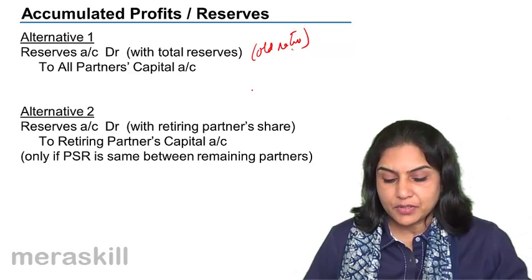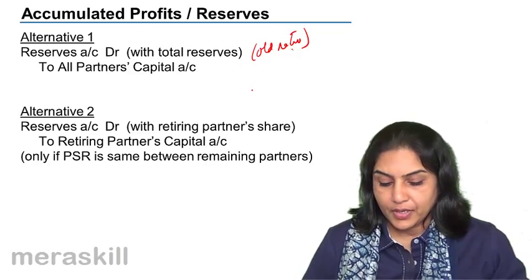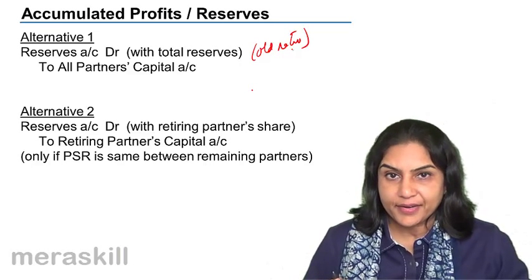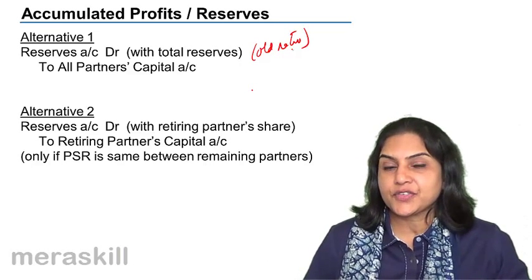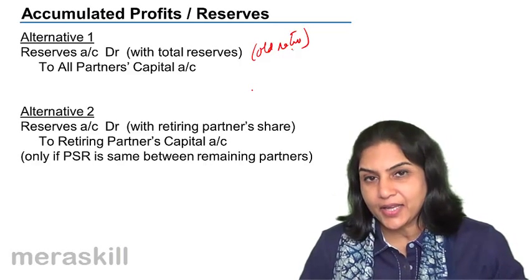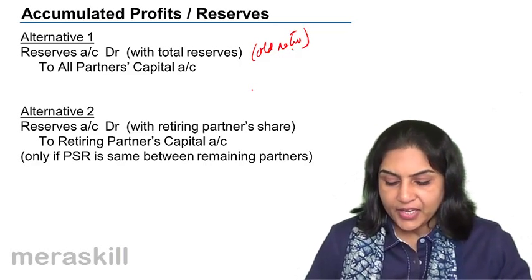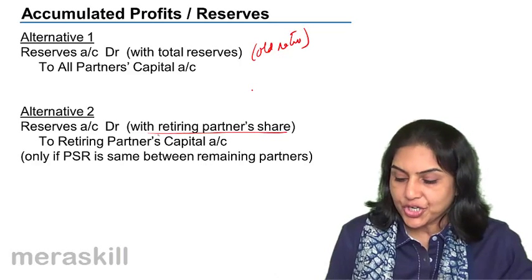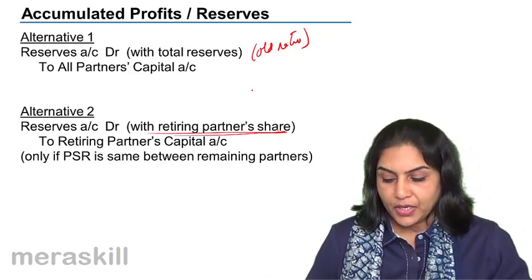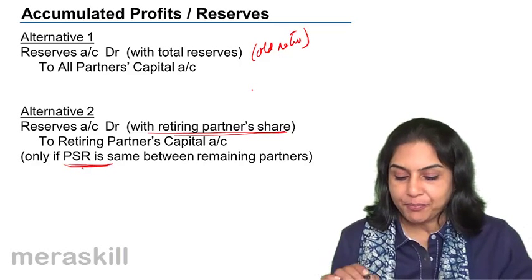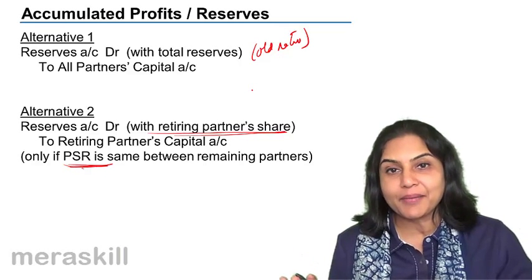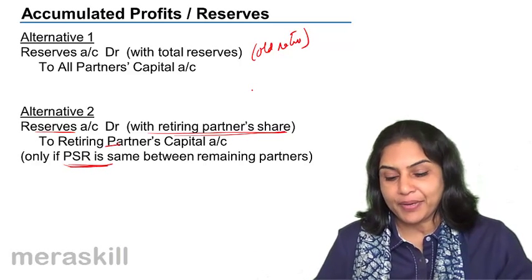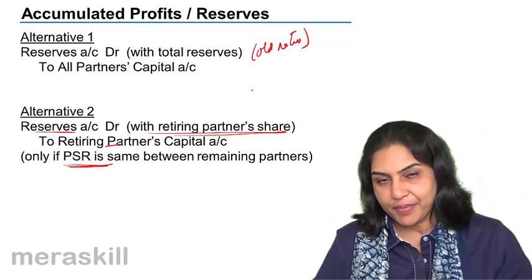But sometimes only the retiring partner's capital account is credited, with the remaining reserves the firm wants to retain in the balance sheet. In that case, we pass an entry: reserves account debit to retiring partner's capital account with only his share. However, care should be taken to see that the profit sharing ratio remains the same between the remaining partners. If that is the same, we pass: reserves account debit to retiring partner's capital account — take only his share and credit the retiring partner's capital account.